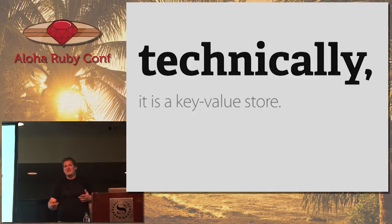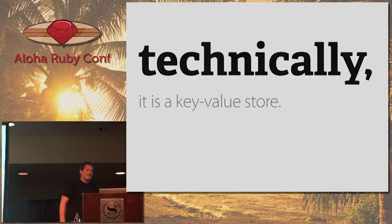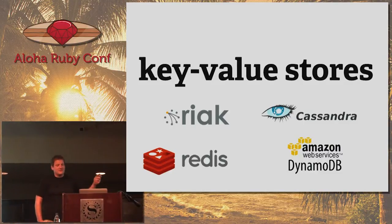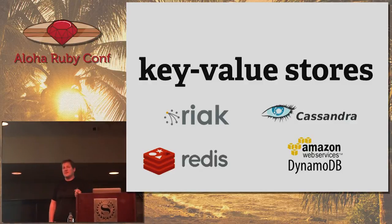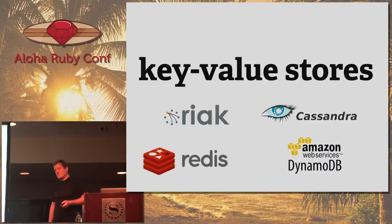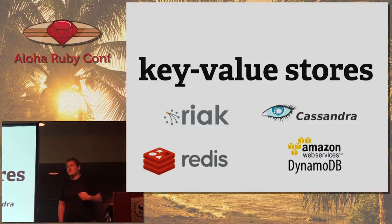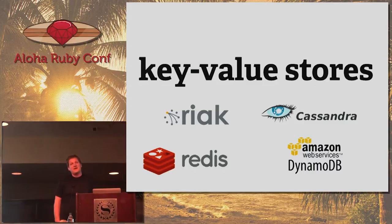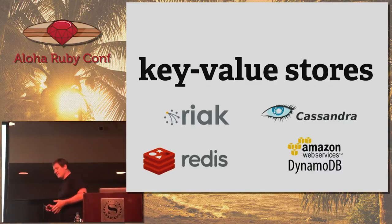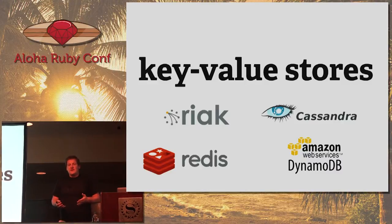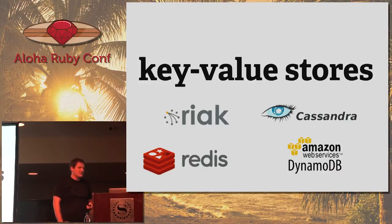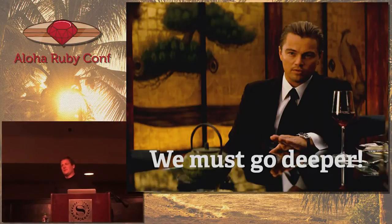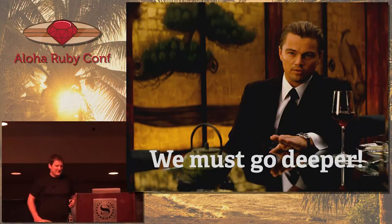A file system obviously is not a good data store, but if we want to get technical about it, it is a key-value store — you give it a key, which is a path, and stick some value in it. Other key-value stores include Redis, Cassandra, Amazon Dynamo — these are all awesome databases. But if we went just down the file system route, we'd quickly run into issues: there are three operations I have to do on the file system before I can commit, meaning only one process can do that at a time.